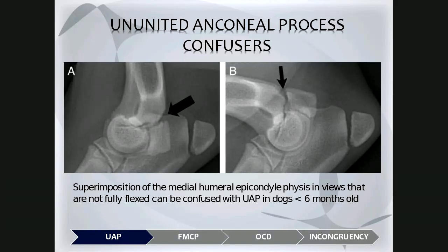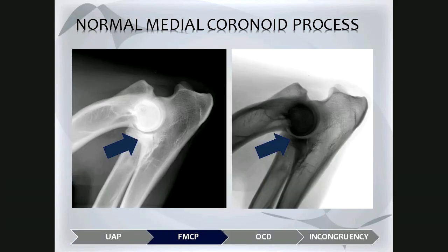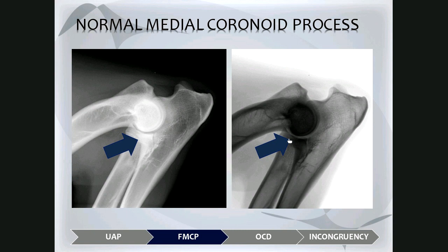Next, we will look at the medial coronoid process, which is part of the ulna. It's found by following the cranial cortex of the ulna upward, where it forms a nice sharp pointed structure. On the inverted digital image, one can clearly see that very nice pointed triangular medial coronoid process, which is normal in this patient.